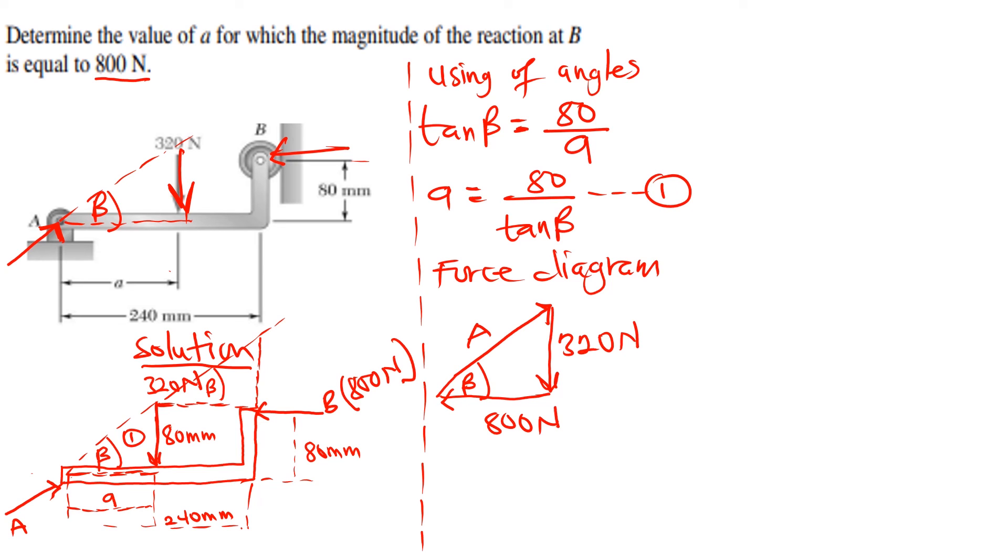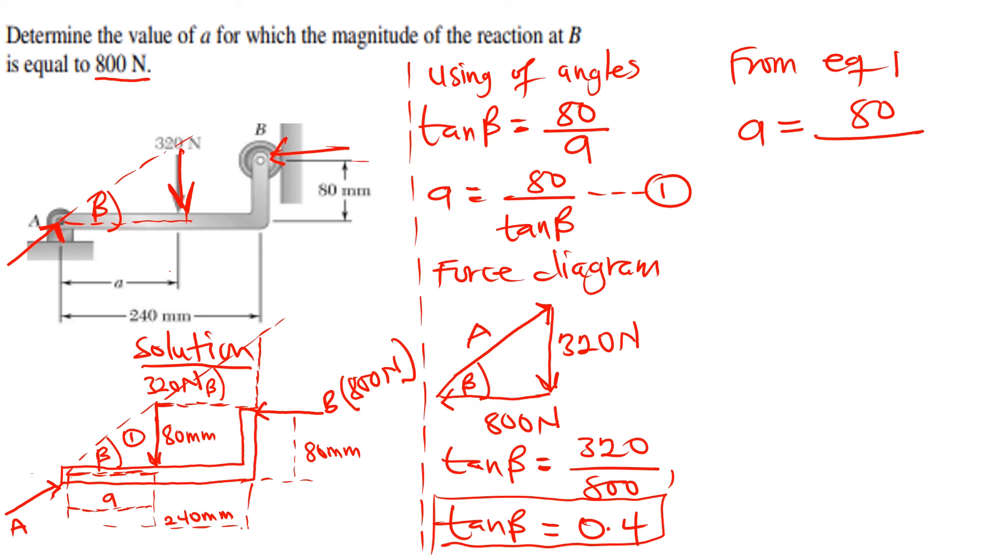So mainly we are going to still have our beta over here. So from this small triangle, or from the force triangle, we can also again have tan beta, which is going to give us opposite, which is the 320, over the adjacent, which is 800. Meaning our tan beta is going to be 0.4. So we now know the value of tan beta. That means from equation 1, we can say that the A is going to be 80 on tan beta, which is 0.4. And when you punch this, your A is going to be 200. And we are working in millimeters. This is already in millimeters.